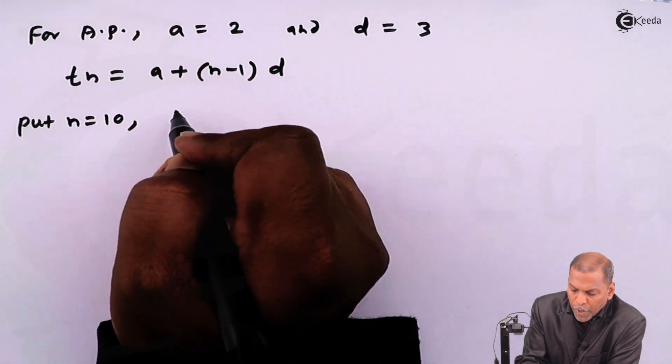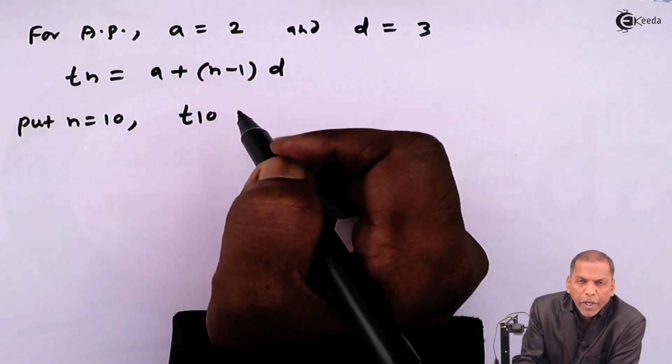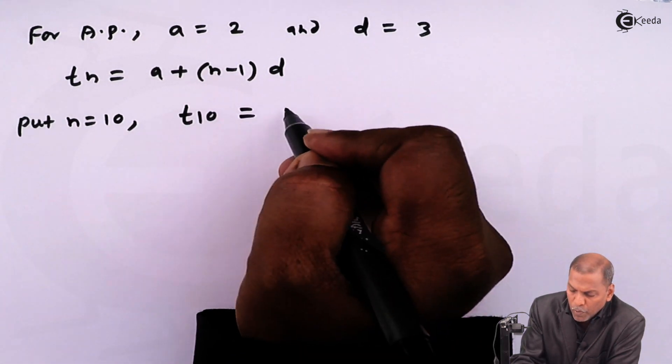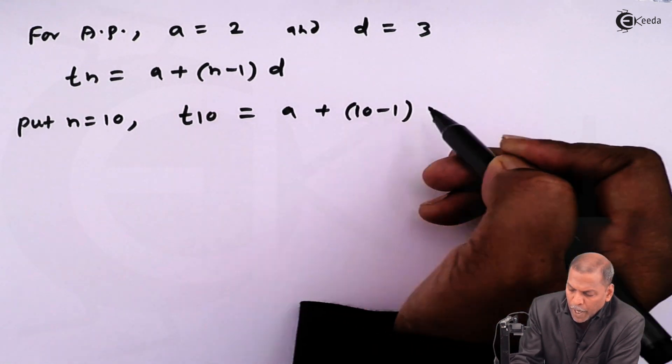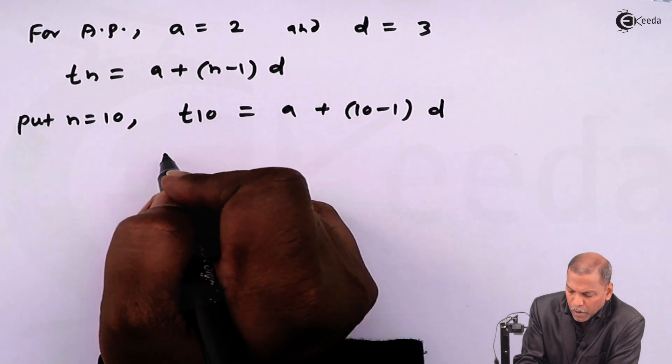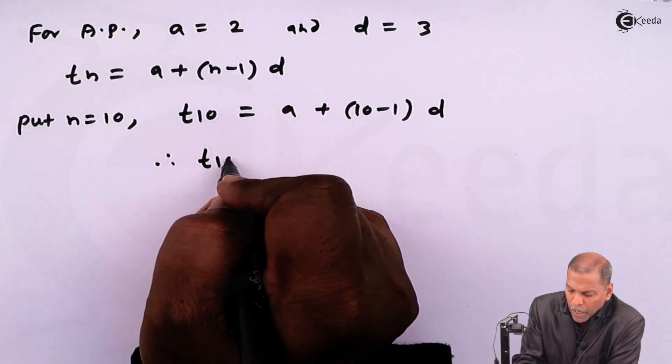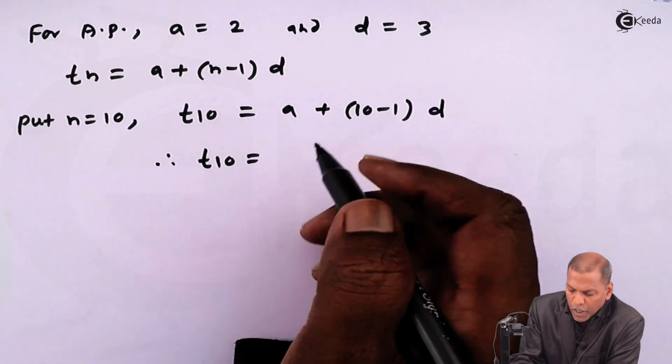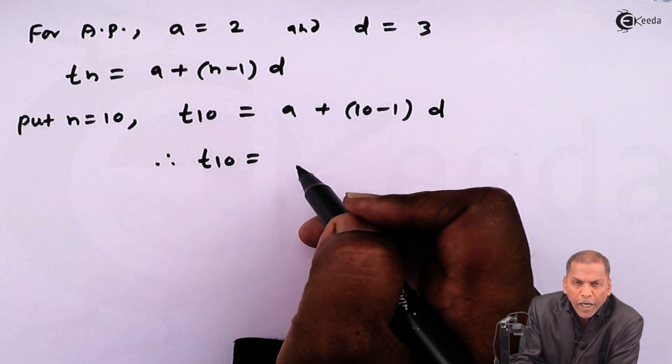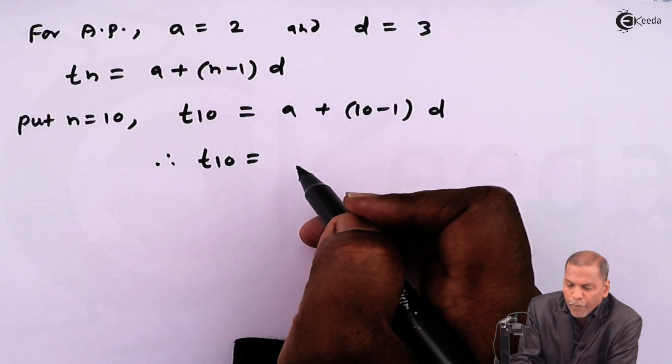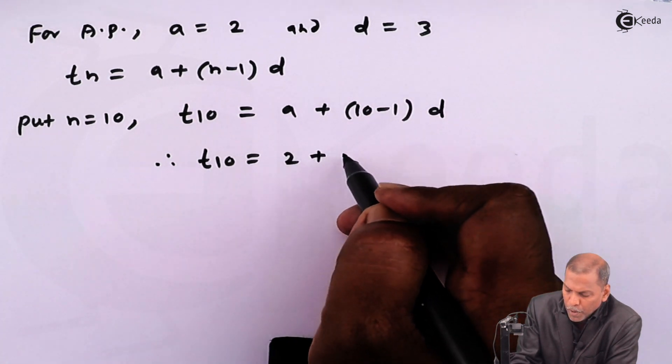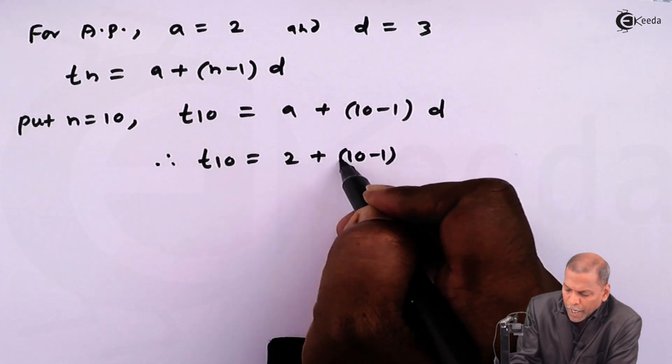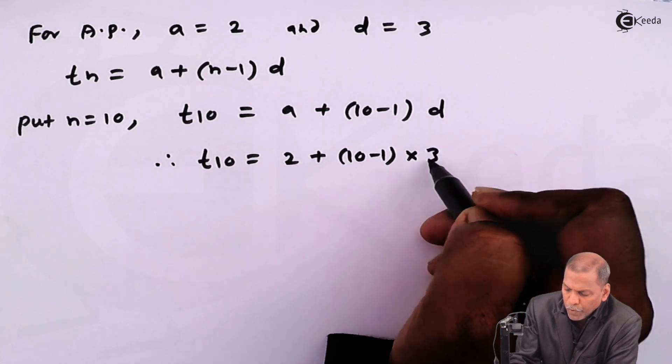So we have T10 is equal to A plus 10 minus one into D. And therefore, T10 is equal to, now for A we substitute two and for D we write three. So we get two plus 10 minus one into three.